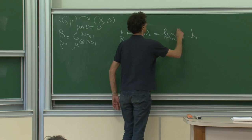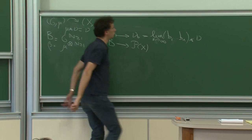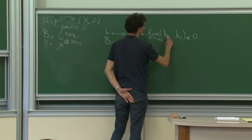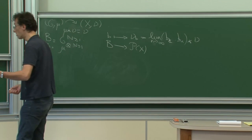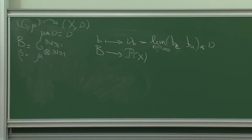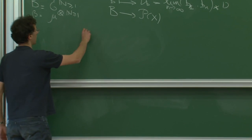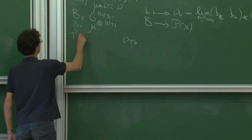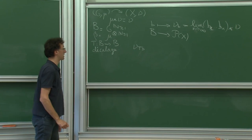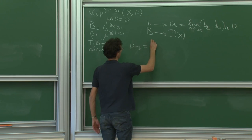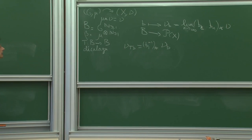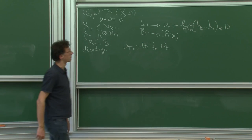Cette limite est obtenue en poussant la mesure nu par la suite de transformations aléatoires, qu'on écrit dans le mauvais sens : normalement quand on agit par des transformations on agit à gauche, mais là on agit dans l'autre sens. On pousse nu et on obtient quelque chose qui converge, ce qui est une conséquence du théorème des martingales de Doob. Cette famille vérifie une relation d'équivariance par rapport à l'application de décalage T (le shift map).